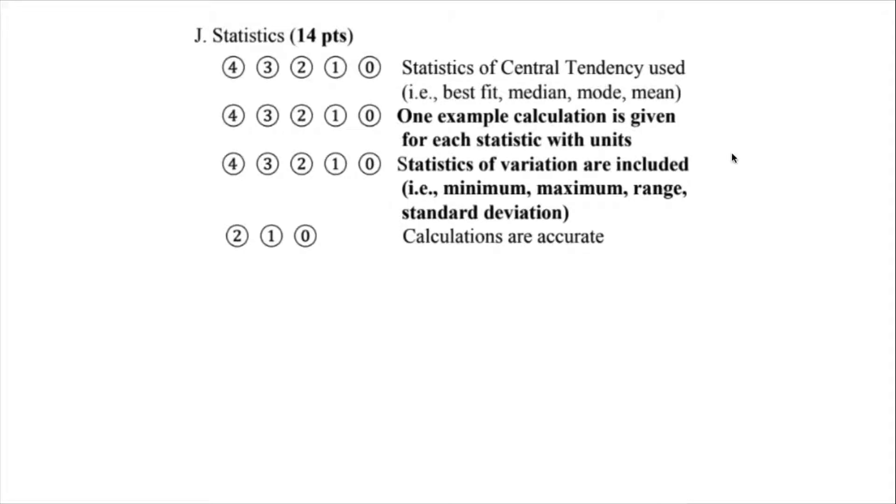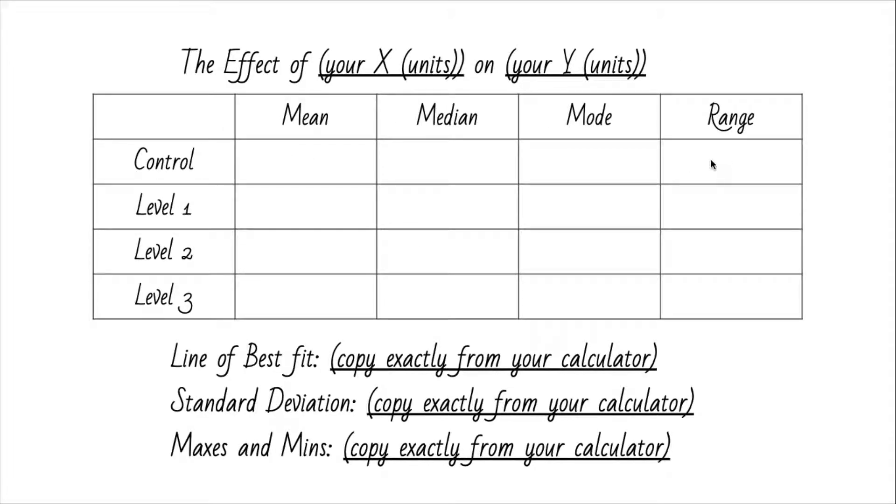And then statistics, so they also added something new this year, it's the central tendency, but the statistics of variation actually, maximum, minimum, and standard deviation are the new ones. And this is also something that you need to know how to make it neat for. So here's another template for another table, another table for your statistics. Always include the title, the effect of blah on your blah with units. And then include mean, median, mode for your control level one, level two, and level three, and also range. So these four actually are kind of pretty easy for you to figure out even just eyeballing the data table.